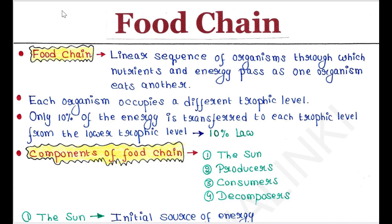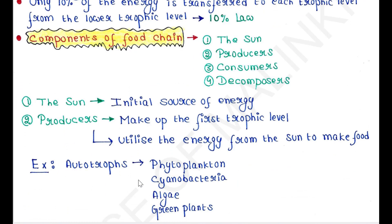Basically, a food chain is a linear sequence of organisms through which nutrients and energy pass as one organism eats another. Each organism occupies a different trophic level. Only 10% of the energy is transferred to each trophic level from the lower trophic level, and the rest of the energy is lost in the environment. This is called the 10% law or 10% rule.